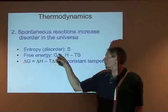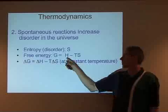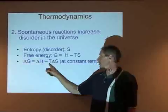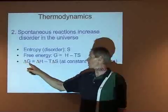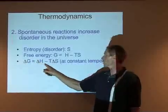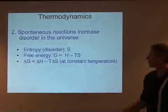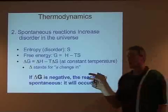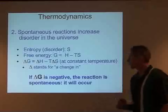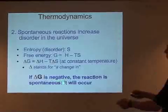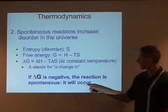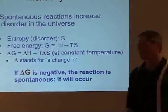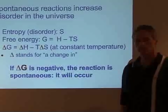Free energy is called the Gibbs free energy, or G. That is enthalpy minus T times S — temperature times entropy. At constant temperature, delta G, the change in Gibbs free energy, equals delta H minus T times delta S. If delta G is negative, the reaction is spontaneous — it will occur. That is an important point: delta G is negative means the reaction will occur.